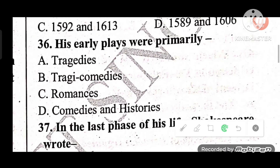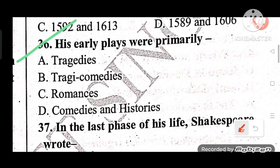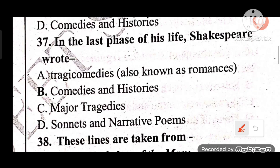Question 36: His early plays were primarily what? The answer is D — primarily comedies and histories. Question 37: In the last phase of his life, Shakespeare wrote what? He wrote tragicomedies, also known as romances, in the last phase of his life.